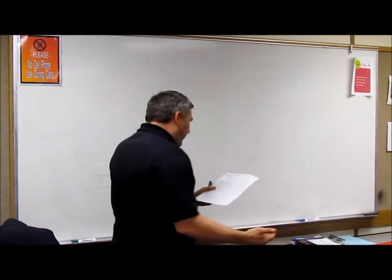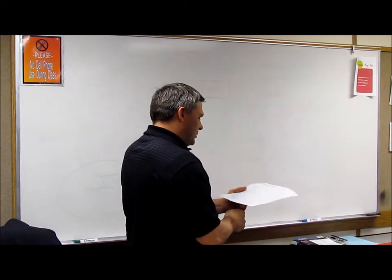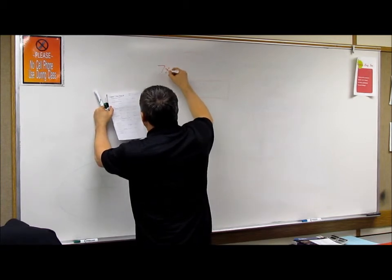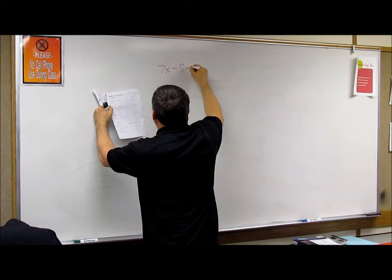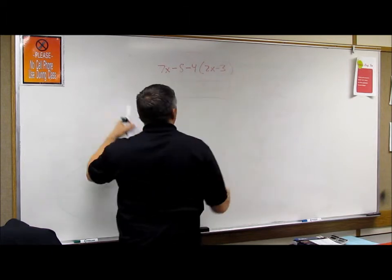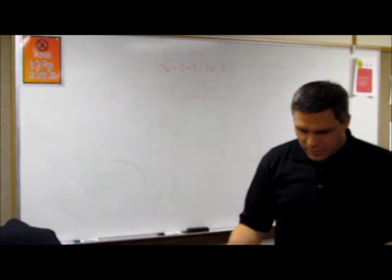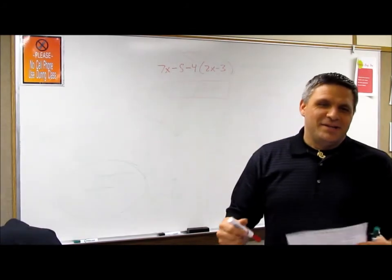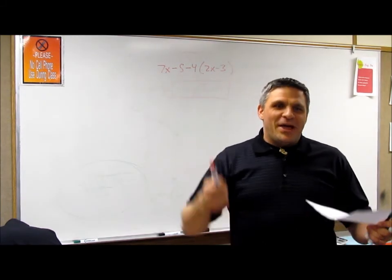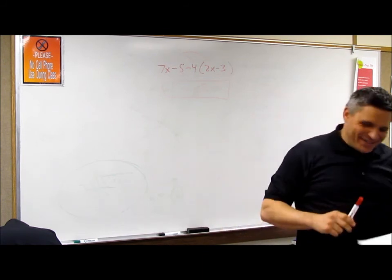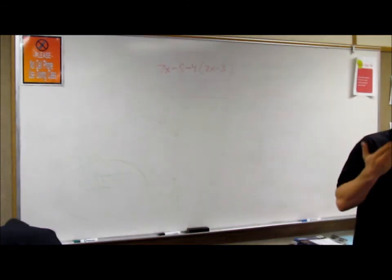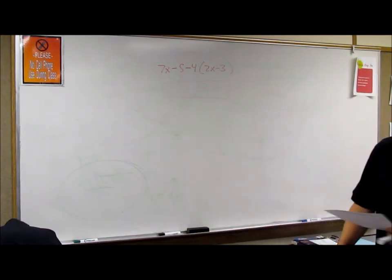I'm going to skip number 4 and go straight to number 5. We'll go to 5 and then we'll go to 6. 5 is 7x minus 8 minus 4 times 2x minus 3. Why did you skip this 4? Because it was easy. I'm never supposed to say that. But I didn't get it. Wait, just kidding. That's why I skipped it. Now, 4 can be a little tricky, but it's really just add the numbers with the numbers, the x's with the x's.